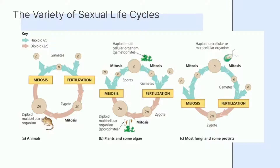Selanjutnya kita akan membahas macam-macam seksual life cycle pada hewan, tumbuhan, dan fungi atau jamur. Proses meiosis dan fertilisasi terjadi pada semua organisme yang bereproduksi secara seksual. Perbedaan dalam tiga tipe utama seksual life cycle adalah waktu tiap prosesnya. Pada hewan, gamet adalah satu-satunya sel haploid. Gamet dihasilkan melalui proses meiosis, kemudian terjadi fertilisasi yang menghasilkan zigot. Zigot akan melalui proses mitosis untuk berkembang menjadi organisme multiseluler. Pada hewan, proses yang dominan adalah diploid stage.